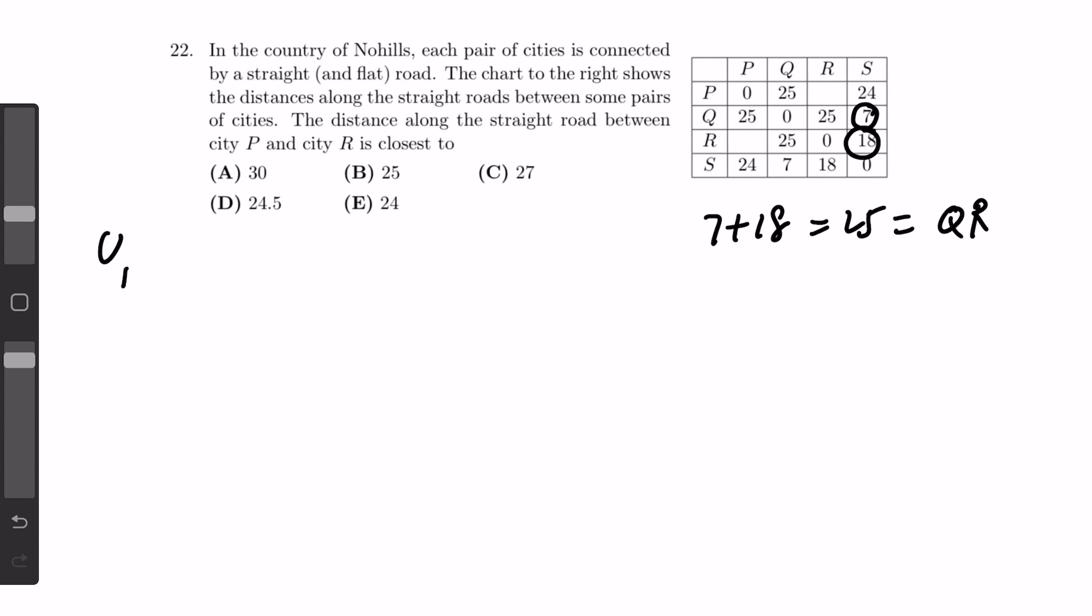So let's say this point is Q, and this point is R. Since the distance between S and Q is 7, so S would be somewhere around here.